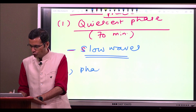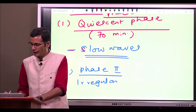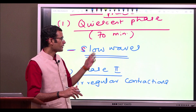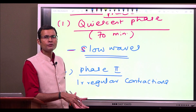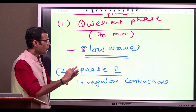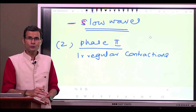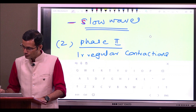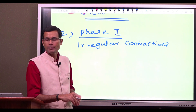Phase two is a phase of irregular contractile activity. Irregular contractions mean some slow electrical waves will be followed by contractions and some slow waves will not be followed by contractile waves. So irregular contractions start happening in phase two. Also, bile flow in the duodenum occurs at the peak of phase two. So bile flow occurs in phase two of the MMCs.